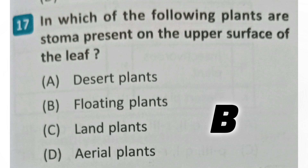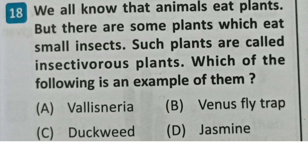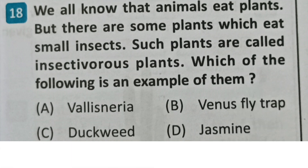Next question: We all know that animals eat plants, but there are some plants which eat small insects. Such plants are called insectivorous plants. Which of the following is an example? Options: Valisneria, Venus flytrap, duckweed, jasmine. The correct answer is B - Venus flytrap.